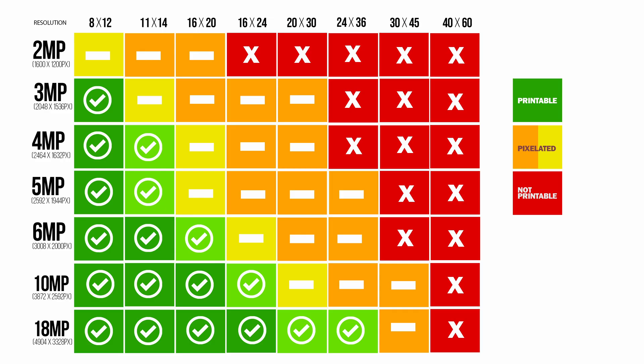To start, here's a chart of the printable range of imagery as it relates to resolution. Looking at the chart, you'll notice that you'll need a lot of resolution — 30MP worth plus — to print anything above a 24x36 to retain all of the detail in the imagery.